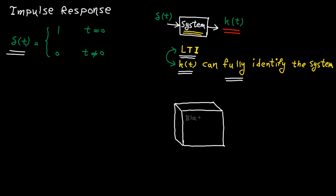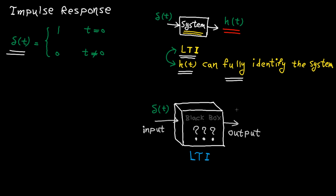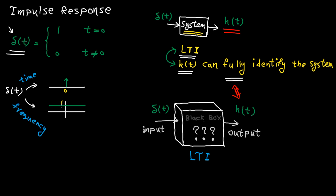What does this mean? Let's say we have a black box system, which means we don't know what is inside the box, but we have access to the input and output. If this system is LTI, to fully understand how this system behaves, all you need to do is apply the impulse function to the input. The impulse response that you get at the output can fully identify the system. Now let me explain why: if you look at delta(t) in the time domain, it's only non-zero at the origin. But if you look at it in the frequency domain, it's one everywhere. If you apply this signal to an LTI system, you are basically stimulating all the frequencies of the system. That's why the response you get is the richest response ever.